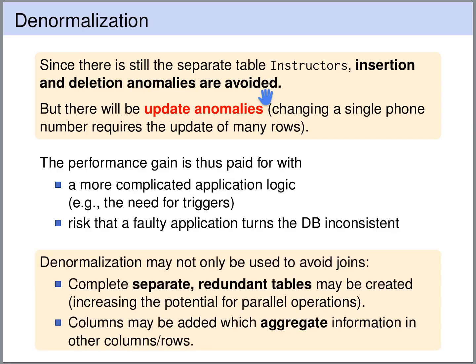Denormalization may not only be used to avoid join operations. We may use denormalization to add completely separate redundant tables with the goal of increasing the potential of parallel operations. Or we may add columns with aggregated information — for instance, the sum of the money of all the bank accounts of a customer. So there are different uses of denormalization in order to make queries faster, simplify applications, or increase the potential of parallel operations.